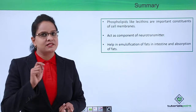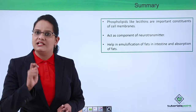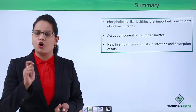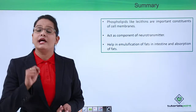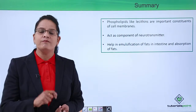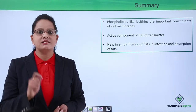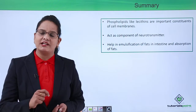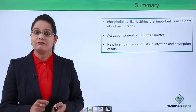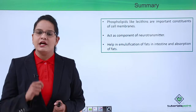To summarize, phospholipids are biologically very important: phospholipids, especially lecithin, form the chemical constituents of almost all cellular biomembranes; they are part of neurotransmitters; they form the myelin sheath; and they help majorly in the emulsification of fat so that fat can be easily digested and absorbed by the body.